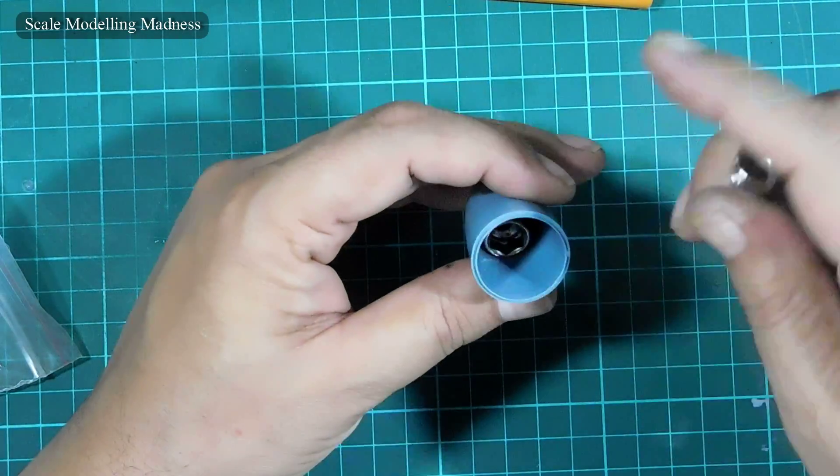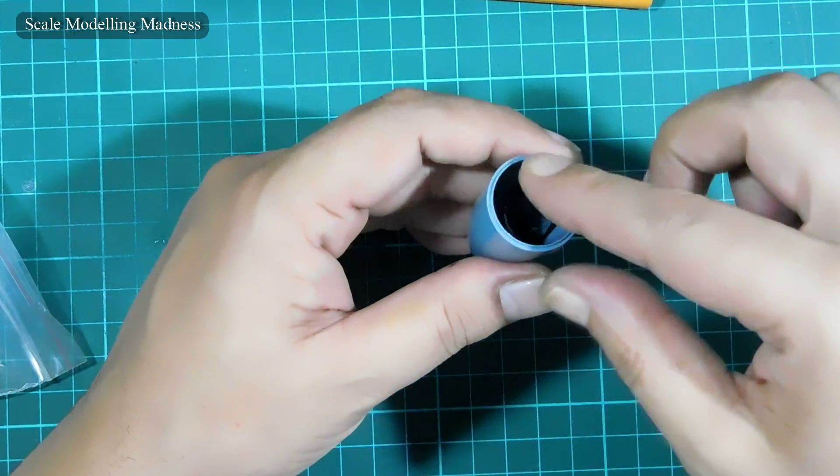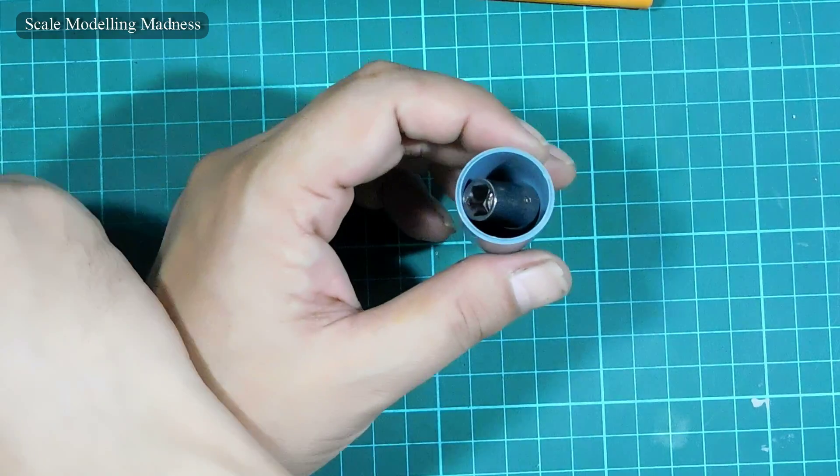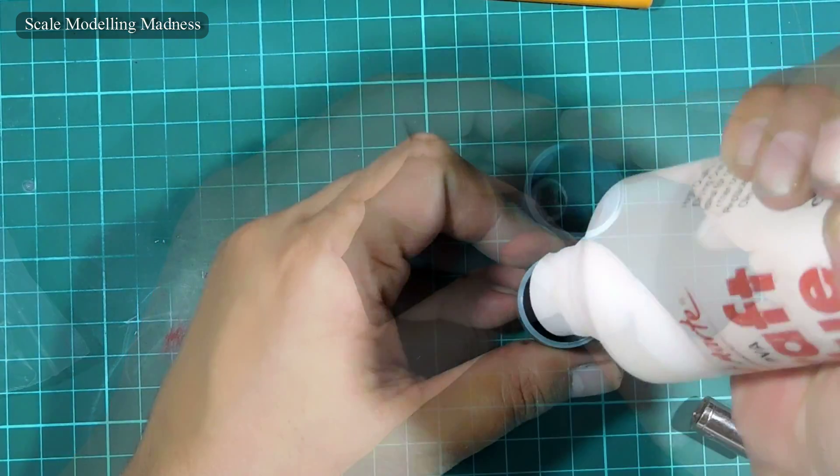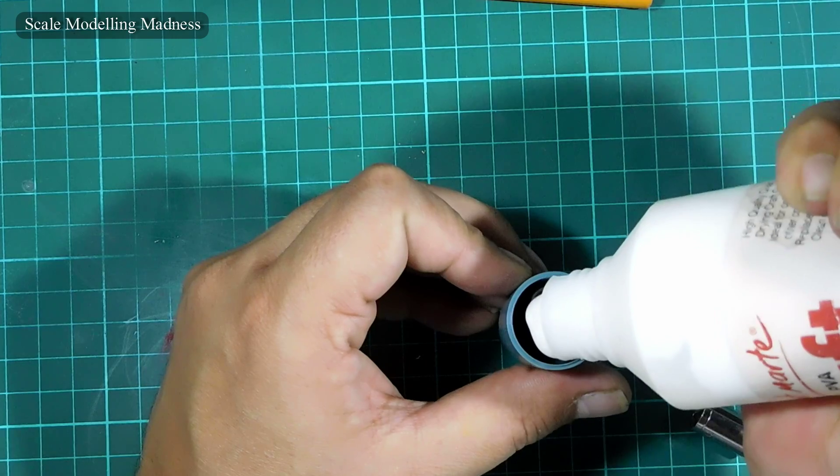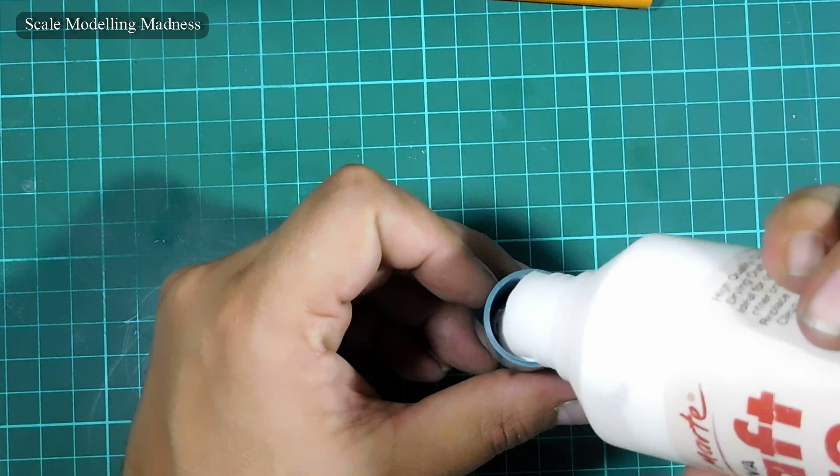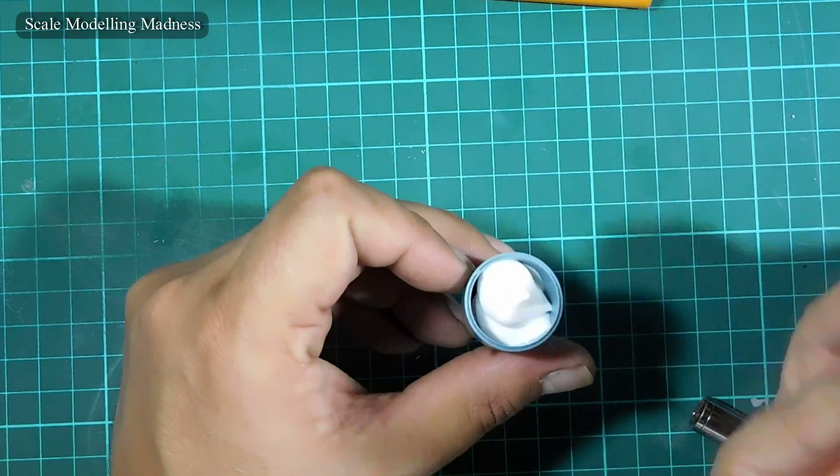Right, time to add weight to the nose cone, so that we don't end up with a tail sitter. I am using these metal screwdriver attachments that I don't use anymore. I flood the nose cone with some glue and then set it aside to dry. Just make sure you find a place where the piece remains upright, so that the glue doesn't leak out.